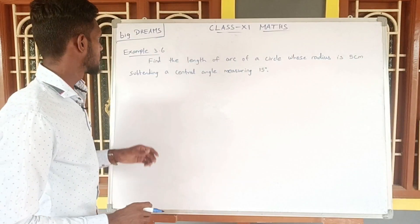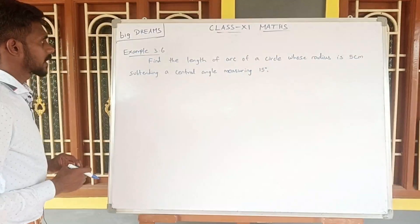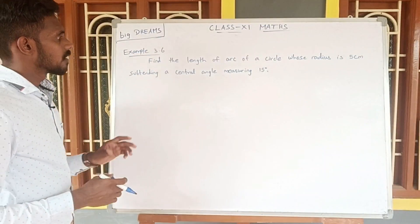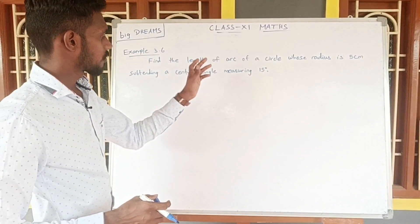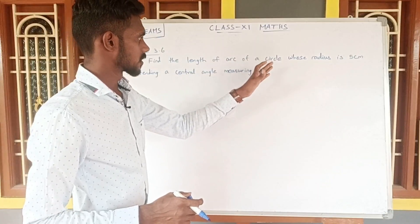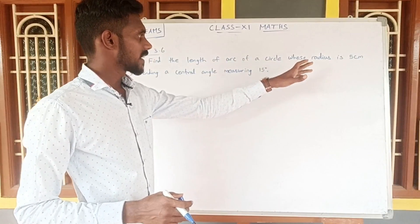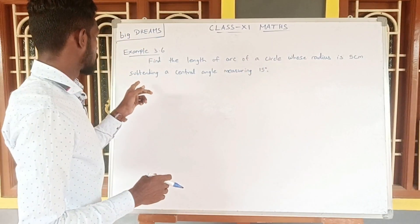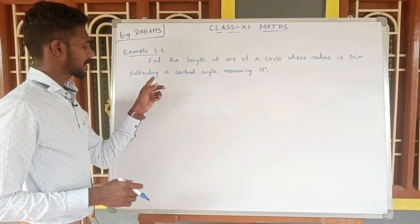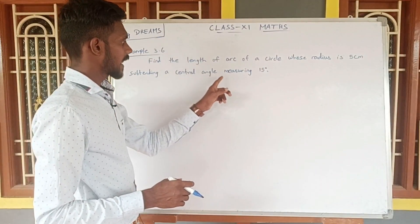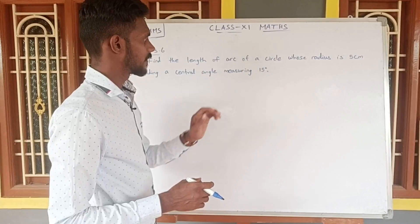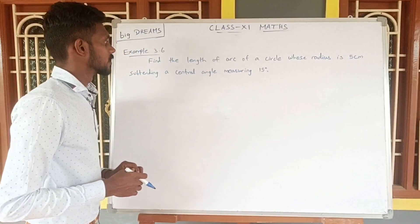Students, next let us see example number 3.6. Find the length of the arc of a circle whose radius is 5 centimeter, subtending a central angle measuring 15 degrees.